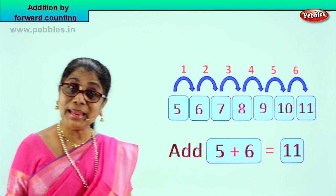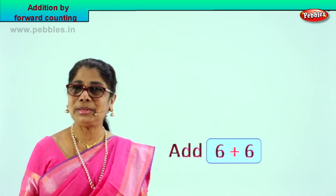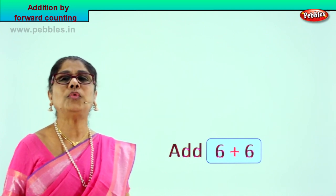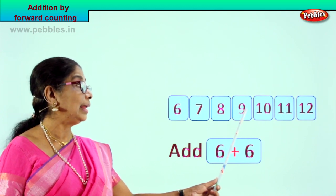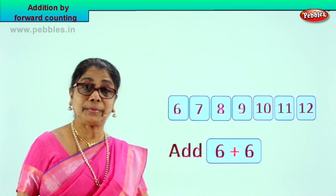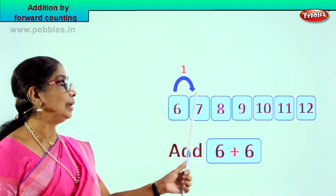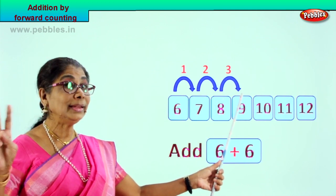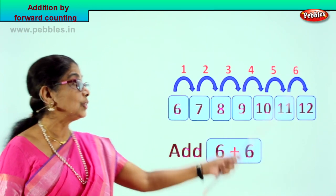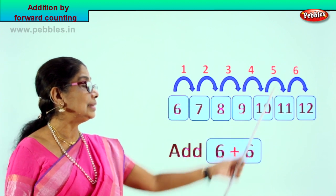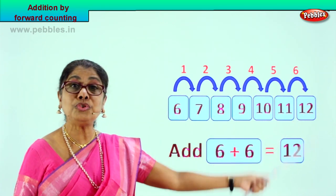Let's take another exercise. The sum given to us is 6 plus 6. We are going to do forward counting. The numbers we have are: 6, 7, 8, 9, 10, 11, 12. We have 6 here, and we count 6 forward: 6 to 7 is 1, 7 to 8 is 2, 8 to 9 is 3, 9 to 10 is 4, 10 to 11 is 5, 11 to 12 is 6. So 6 plus 6 equals 12. What is your answer? 12.